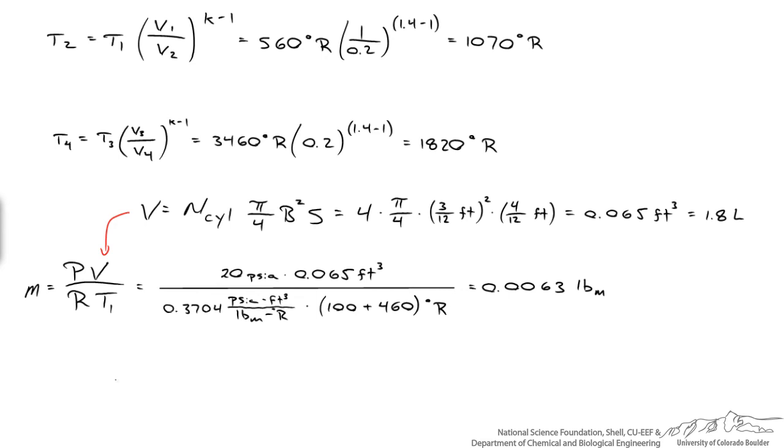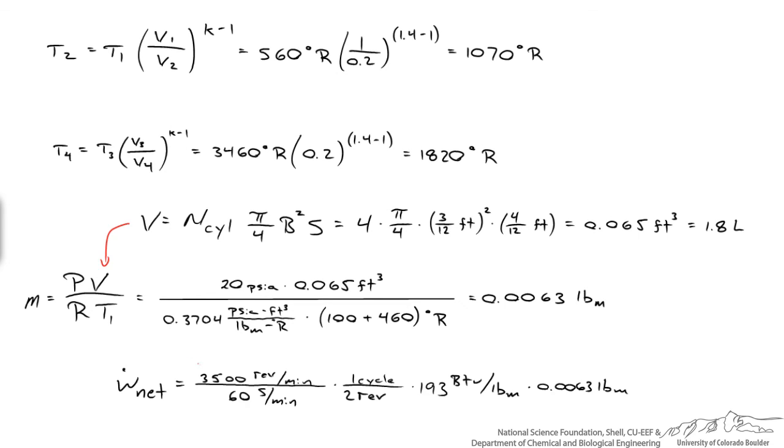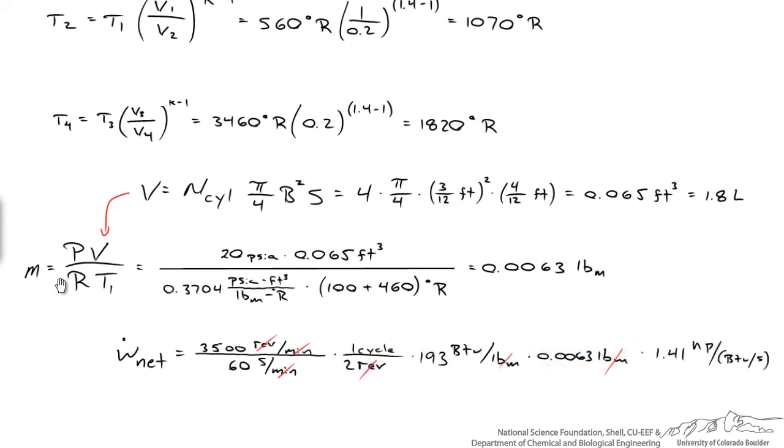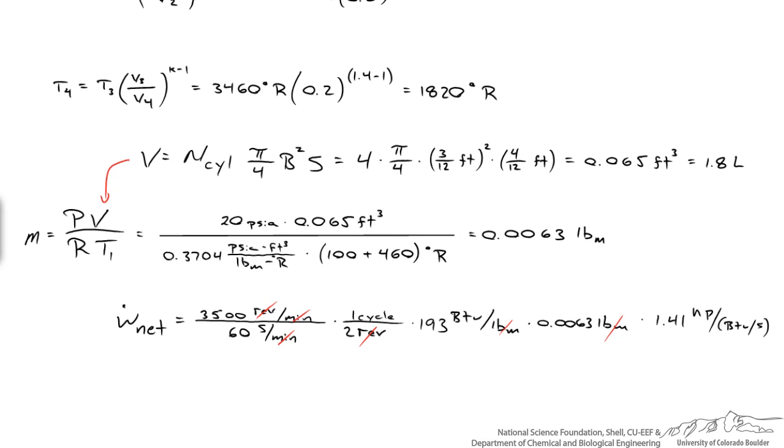So now that we know the mass of air within the cylinder, we can calculate the net rate at which work is being done, and that's equal to the number of rotations per minute, so we know there's 3500 revolutions per minute, 60 seconds per minute, so here's the revolutions per second, and in a four cycle engine there's only one power cycle for every two revolutions. And then here's the net amount of work generated per cycle, and then here's the amount of air that's drawn in by the engine during each intake cycle. So we multiply it by this conversion factor, 1.4 horsepower per BTU per second, so these would cancel out, and we're left with a value.